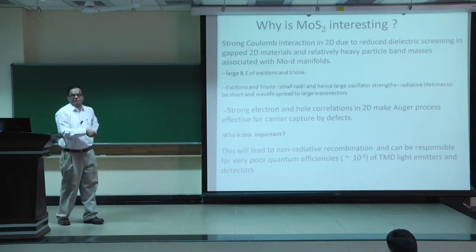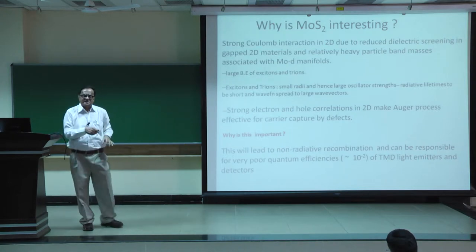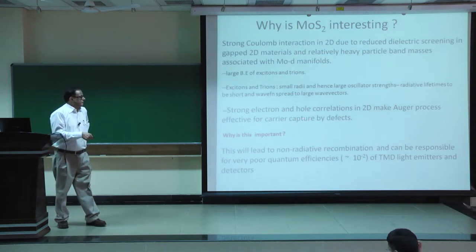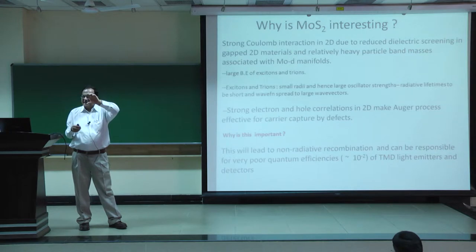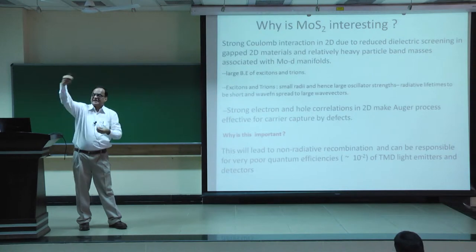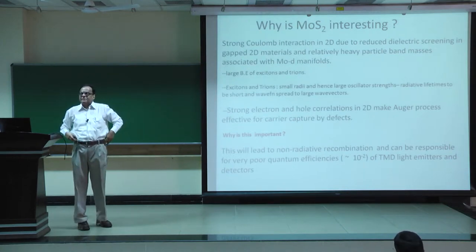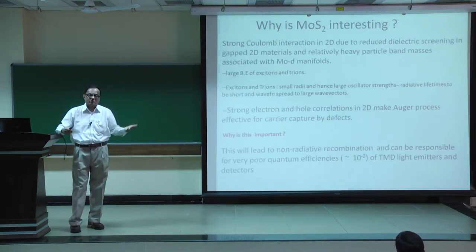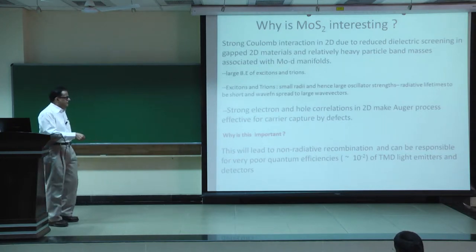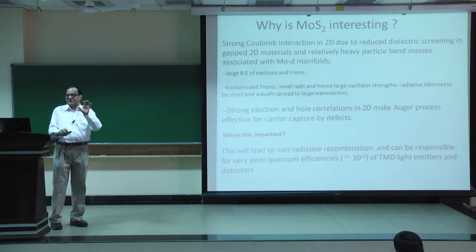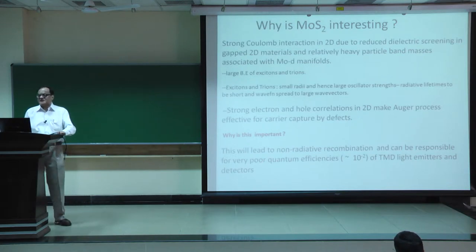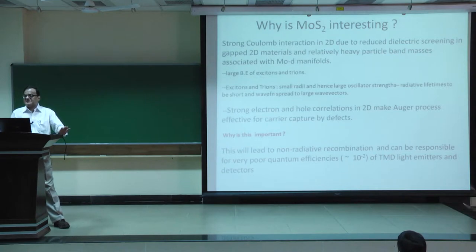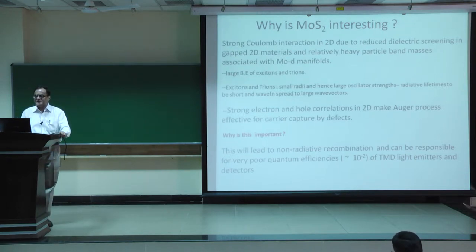From a carrier dynamics perspective, one must realize that strong electron-hole correlations in MoS2 make Auger processes very effective. In an Auger process, an electron-hole pair recombines non-radiatively, transferring the energy to excite another electron. These Auger processes are strong and affect radiative processes. Non-radiative recombination is undesirable for devices like detectors and emitters; because of this, MoS2 devices have very poor quantum efficiency as emitters and detectors. The idea is to tune it appropriately by understanding the strong coulomb interaction in these 2D systems.